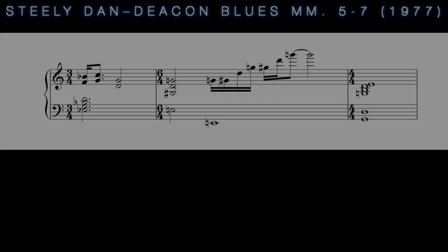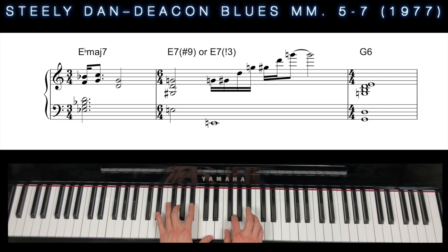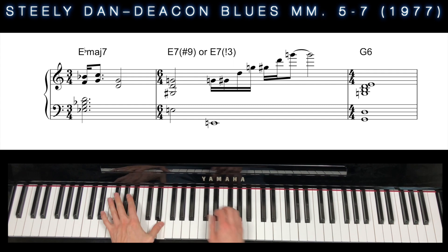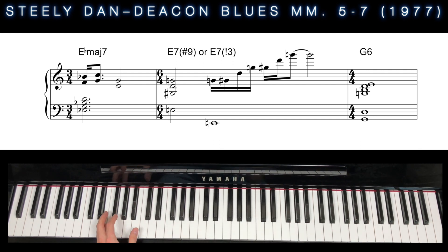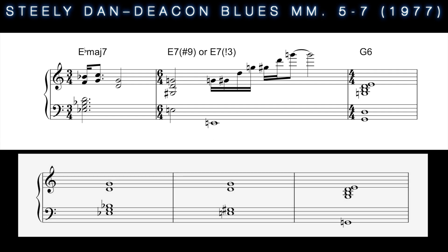Chords with split intervals were later used by rock artists like Jimi Hendrix, Stevie Ray Vaughan, and jazz-rocker Steely Dan, as heard in measure VI of 1977's 'Deacon Blues.' Here the split third, G, as well as the D below it, serve as a common-tone pivot from the previous E-flat major 7th and to the succeeding G6 chord.